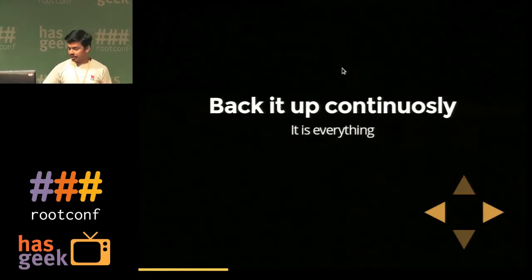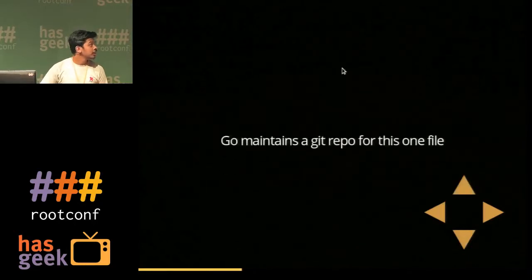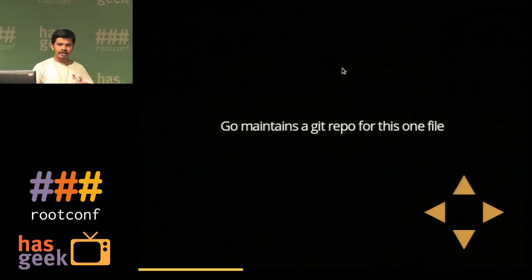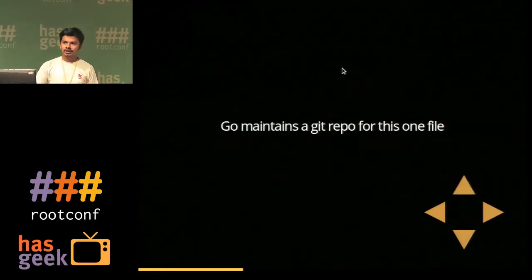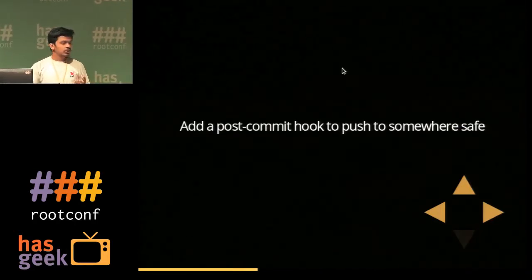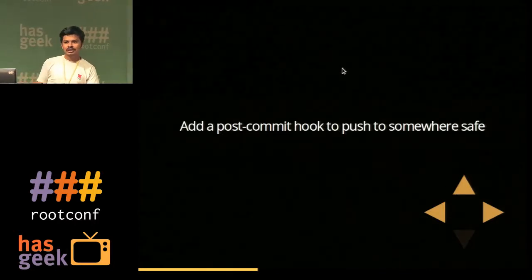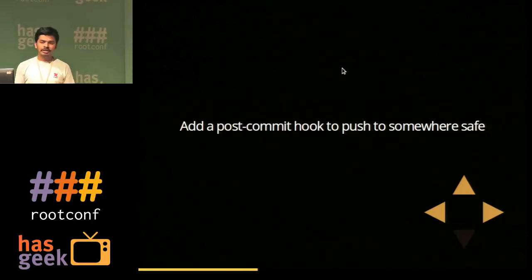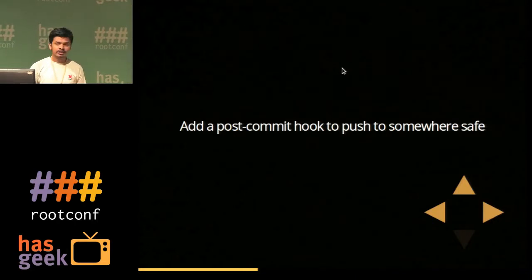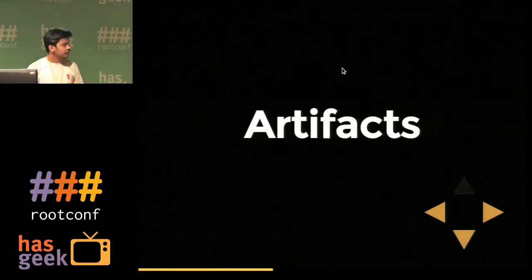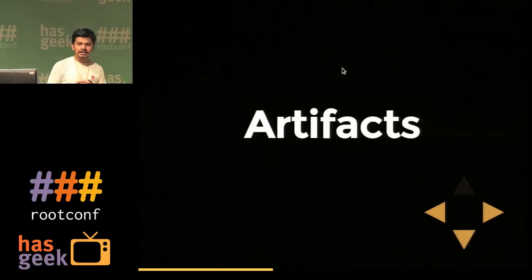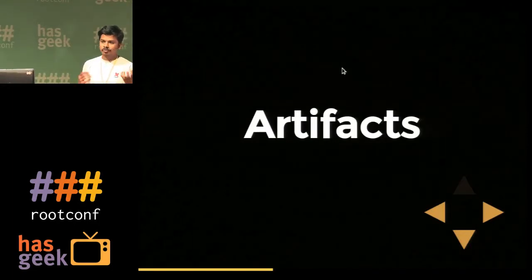Config.xml — you need to back it up continuously because it is everything for GoCD, well almost. GoCD maintains a git repository for itself on the GoCD server. You just need to add a post-commit hook so that every time GoCD commits a change from the UI into that config.xml, it pushes it somewhere safe.